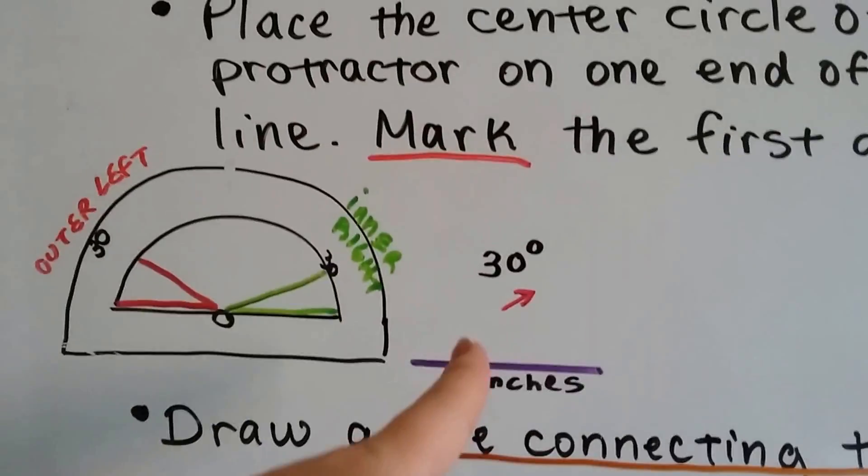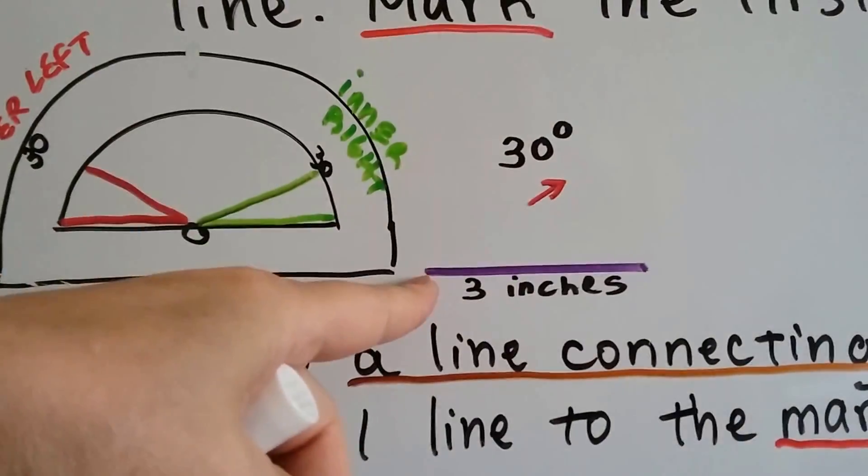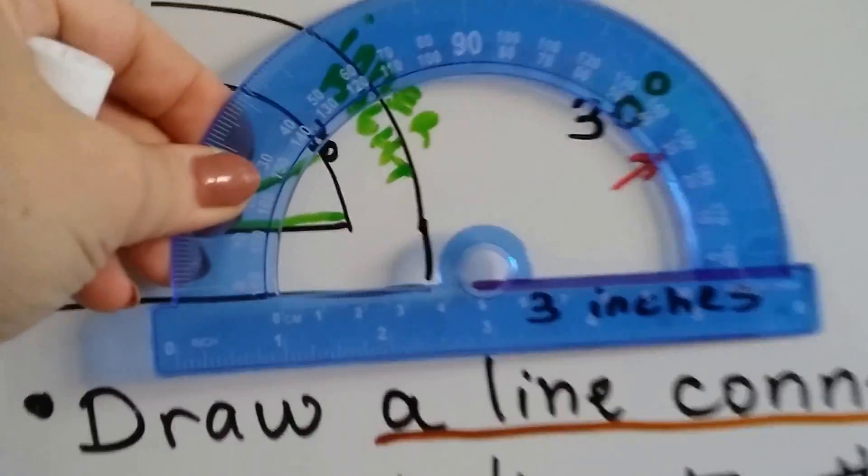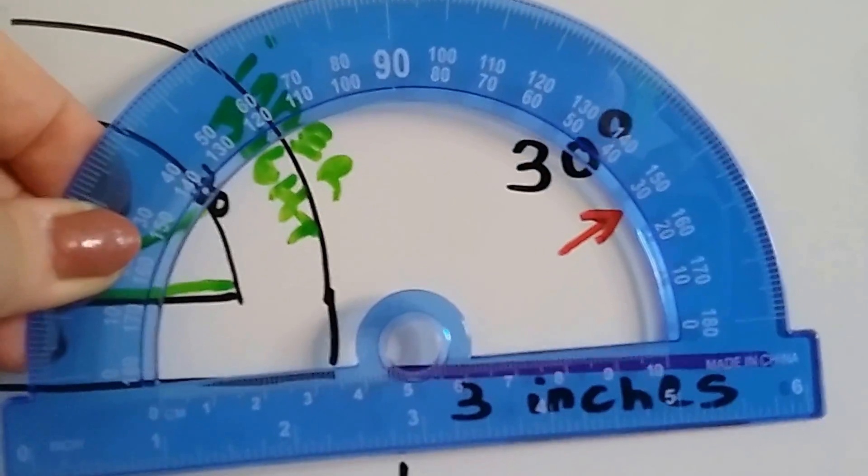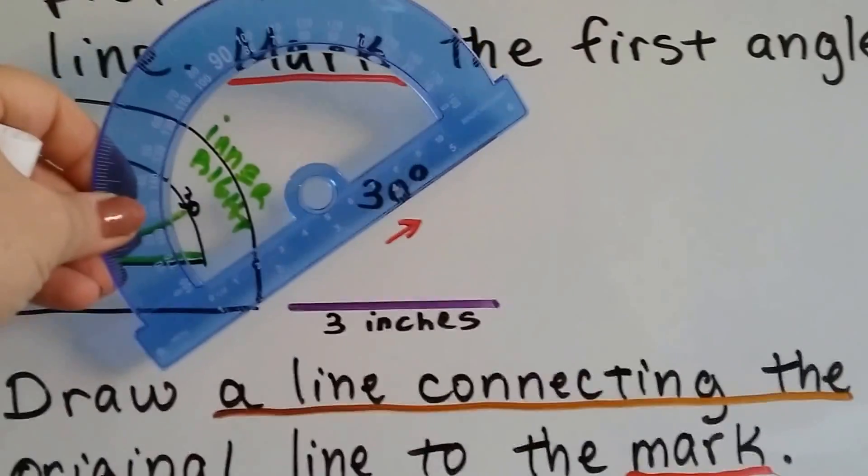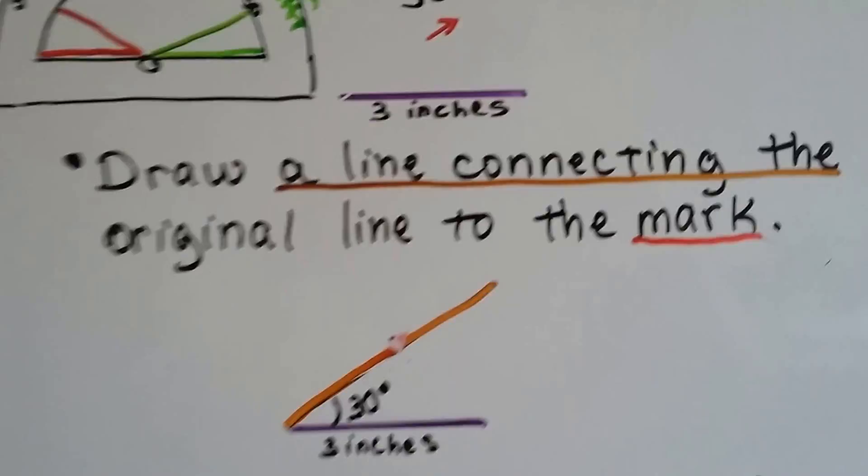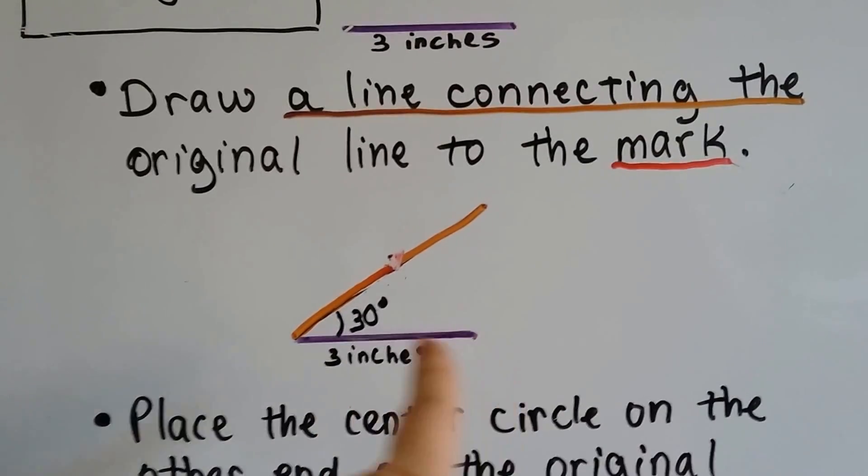So, if we want to make a 30 degree angle, we line our protractor up on one side right here with the circle. And we mark it where it's 30 degrees, where my little red arrow is. And then all we have to do is take the edge of our protractor and draw the line. And we end up with a 30 degree angle with a 3 inch base.